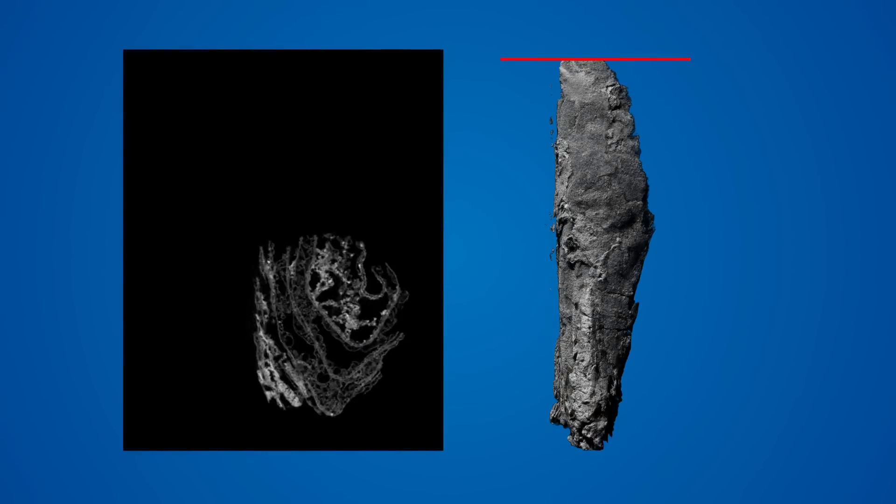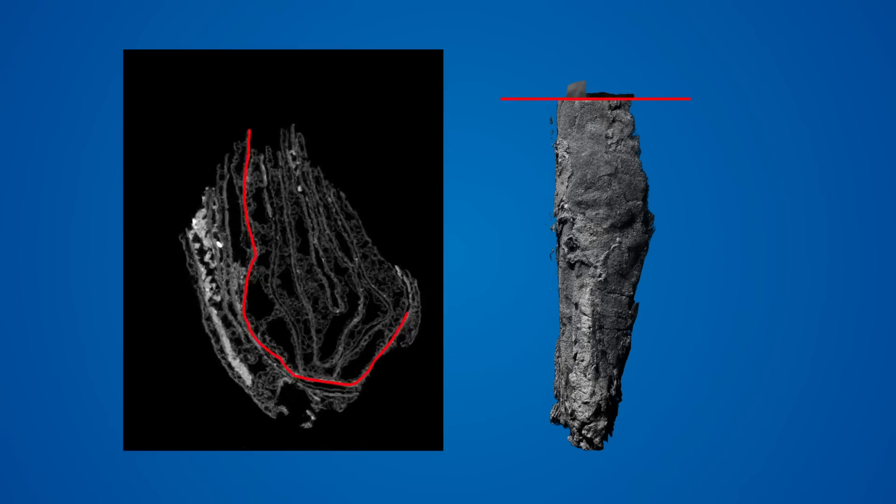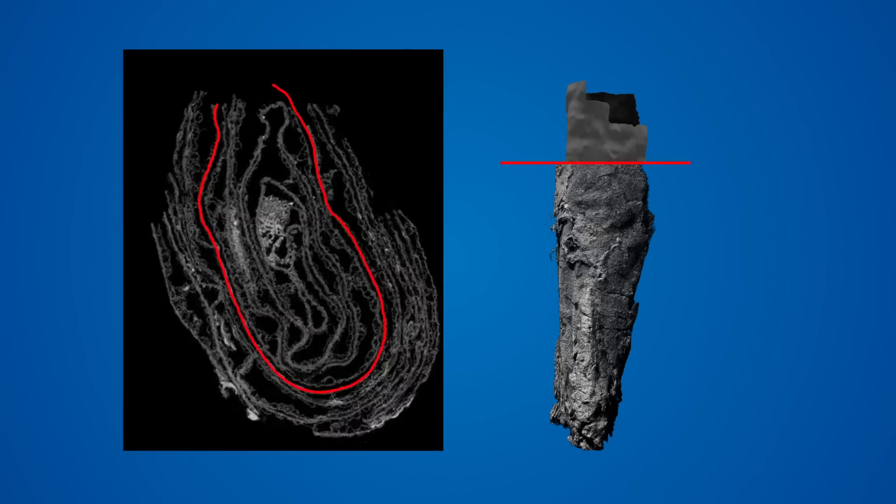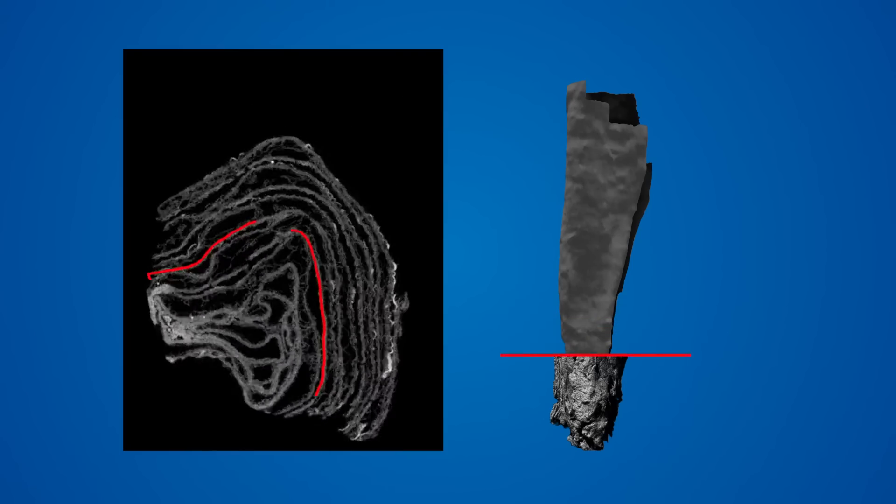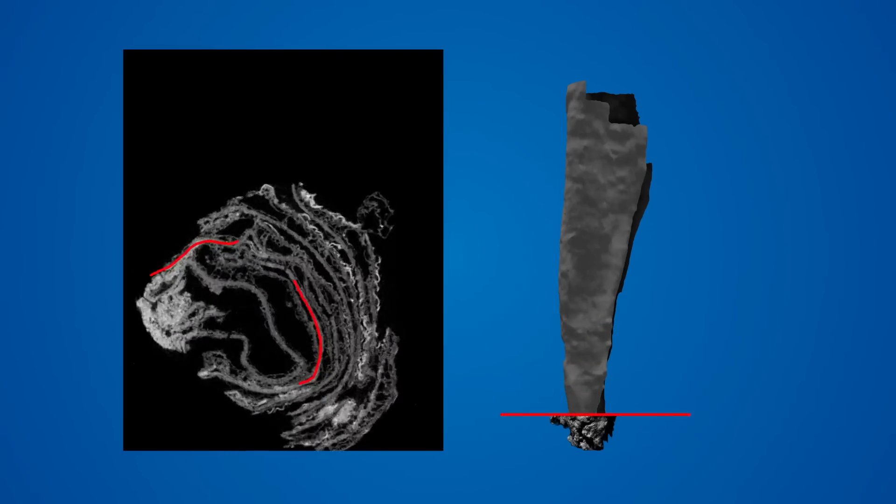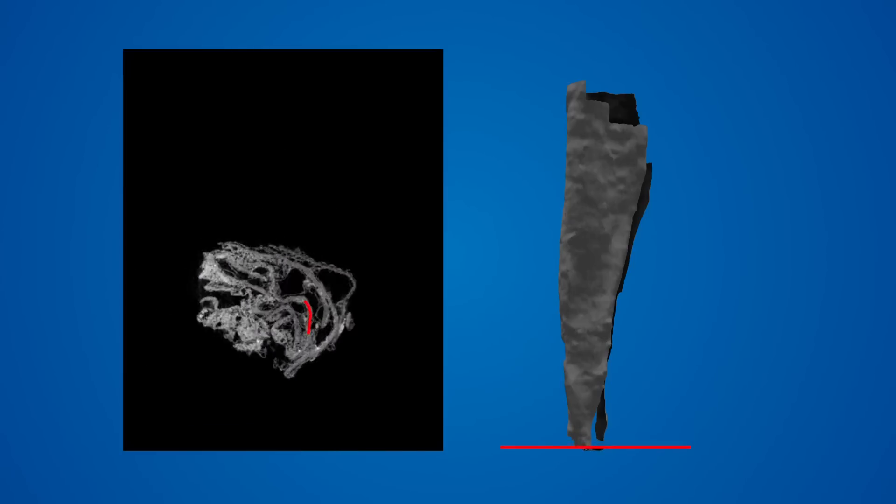First, we capture the 3D shape of the layers of the scroll in a process called segmentation. On the left side of the screen, the software moves through the scroll, image by image, tracing the shape of a single scroll wrap. On the right, we see the 3D model that this produces.